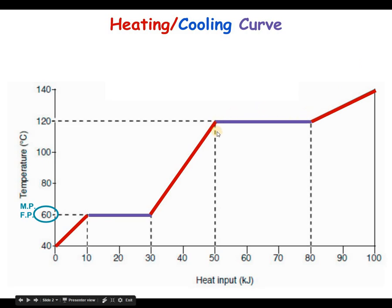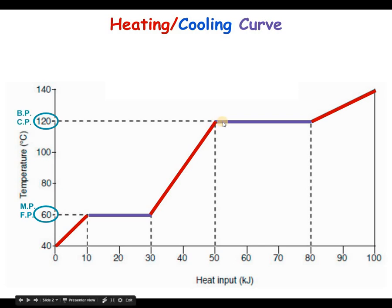The second plateau occurs at a higher temperature and represents the boiling point, also called the condensation point. All the heat absorbed during this period is converted into potential energy of the substance. Conversely, if energy is leaving the substance, we would see condensation — the substance transitioning from the gaseous state into the liquid state — with no change in kinetic energy but a definite change in potential energy.